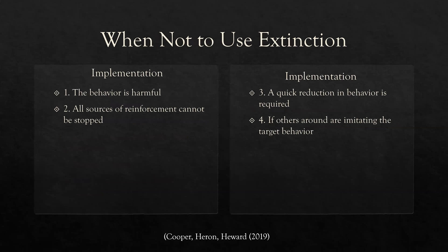When should you not use extinction? If the behavior is harmful, don't put it on extinction. If all sources of reinforcement cannot be stopped, don't use extinction — the person will seek out the reinforcement that can't be stopped. If a quick reduction in behavior is required, don't use extinction, since it isn't always quick. And if others around are imitating the target behavior, don't use extinction.